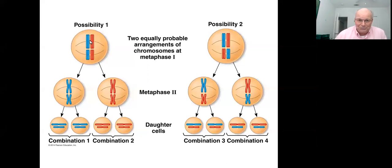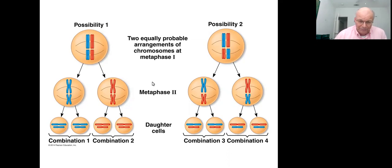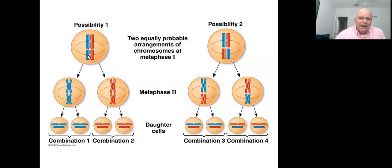Both orientations are perfectly legitimate. This orientation for these chromosomes is just as legitimate as the flipped orientation, and likewise for any other pair. So these two orientations are perfectly available and perfectly possible.